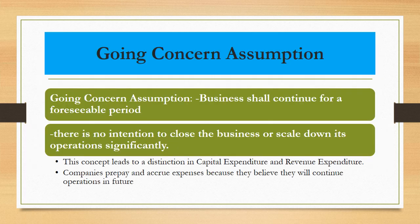Now I am going to explain one of the most important concepts — the Going Concern assumption. It says that whenever a businessman starts a business, there is no intention from his side to discontinue its operations significantly. It means he always thinks that his business will continue for a foreseeable future. This concept helps us in segregating or dividing expenses into capital expenditure or revenue expenditure categories.